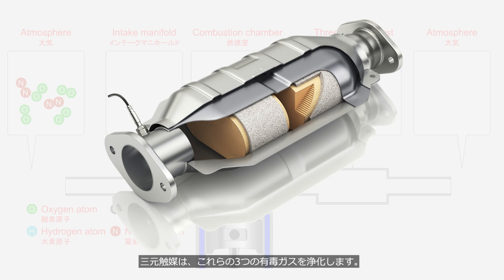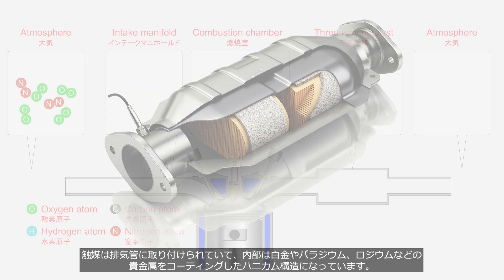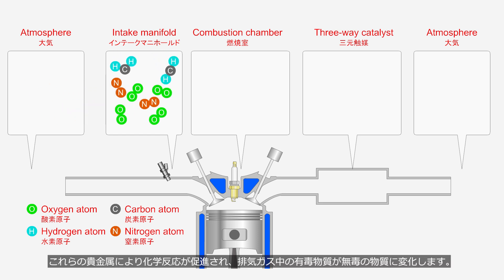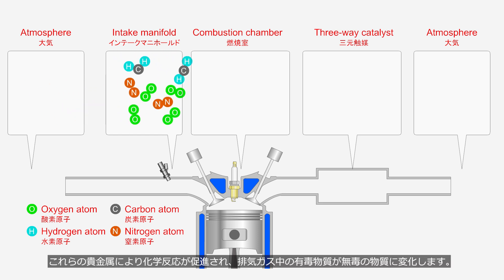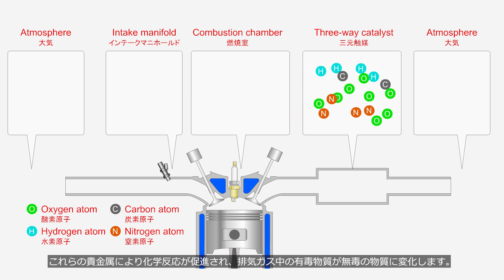The three-way catalyst is used to purify these three toxic gases. It is installed in the exhaust pipe, and the inside has a honeycomb structure coated with precious metals such as platinum, palladium, and rhodium. These precious metals promote chemical reactions, transforming the toxic substances in the exhaust gases into non-toxic substances.